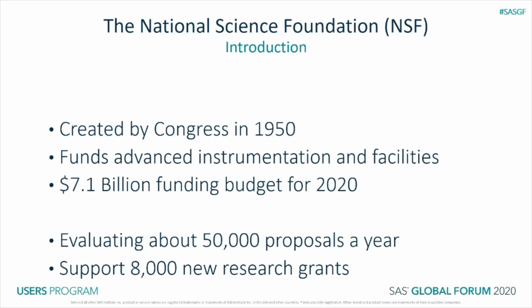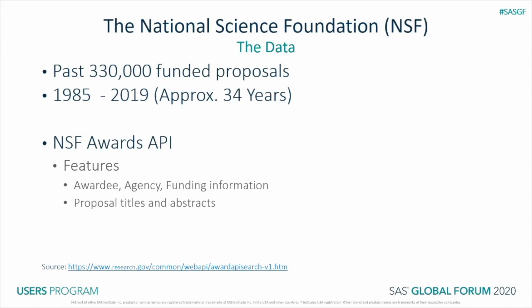This funding supports about 8,000 to 12,000 research grants for many grad students and postdocs. The data collected from the NSF included about 330,000 funding proposals going back to 1985 — about 34 years of data. This data was acquired through the NSF awards API; we built a Python wrapper around a REST API to establish a data pipeline to collect newly funded proposals. Each proposal from the API included information regarding the awardee agency and funding information such as the funding date and amount. Importantly, the API also provided proposal abstracts, which are the abstracts used in this study.